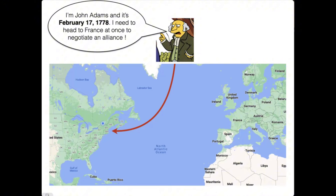It's February 1778. America is busy fighting the American War of Independence against the British, and it's not going so great. They send Benjamin Franklin over to France asking for help. But it's February, and Benjamin has been gone for a while and hasn't really done anything. So John Adams is getting a little anxious and says, 'I have to go to France and see what's going on.' So it's February 17th, and he sets sail from Boston.